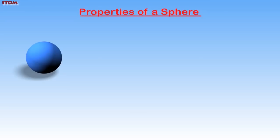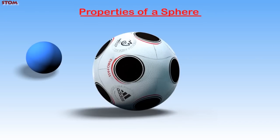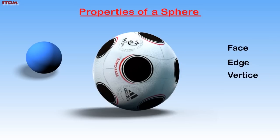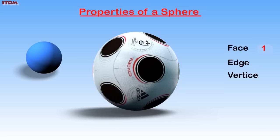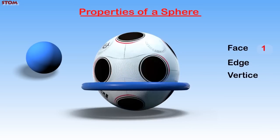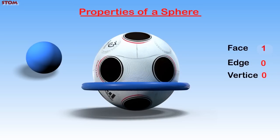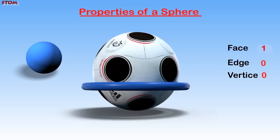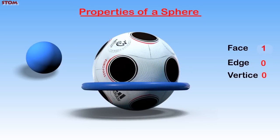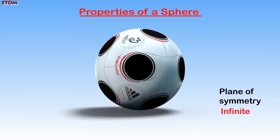Properties of a Sphere. For a spherical object like a football, we can say that it has just one face, while it has no edges and no vertices. A sphere has infinite planes of symmetry.